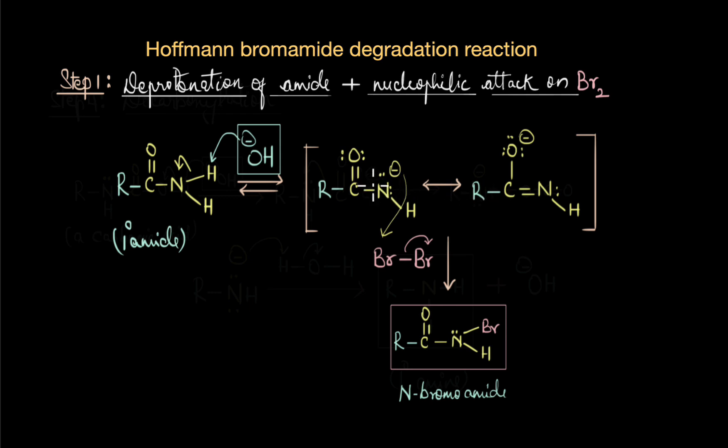These effects cumulatively make these hydrogen atoms acidic, and a strong base like NaOH can easily abstract this proton, giving us this deprotonated amide. The nitrogen atom is nucleophilic and uses its extra pair of electrons to attack the electrophilic bromine molecule, giving us N-bromoamide.